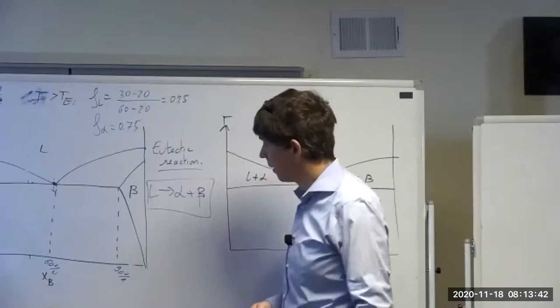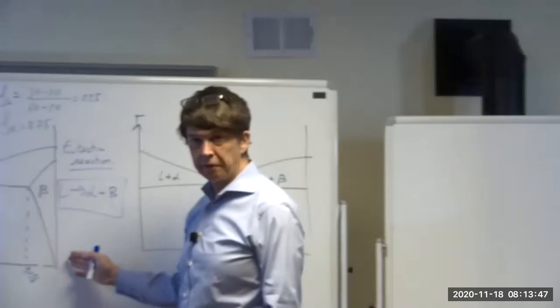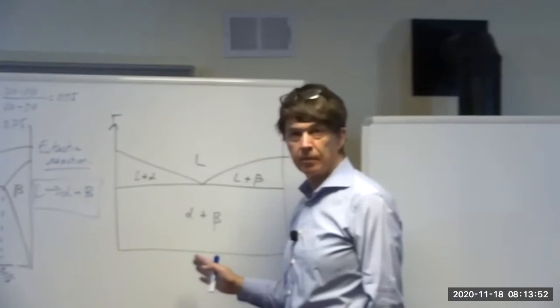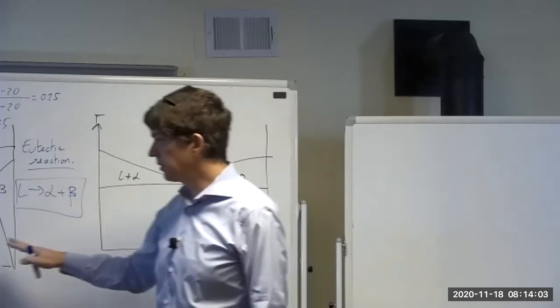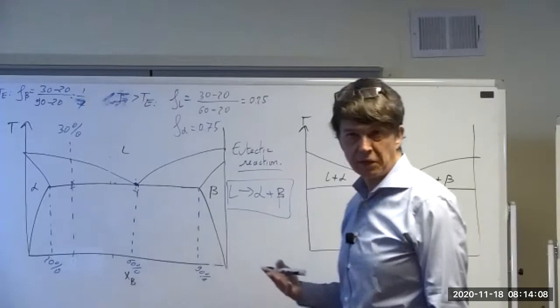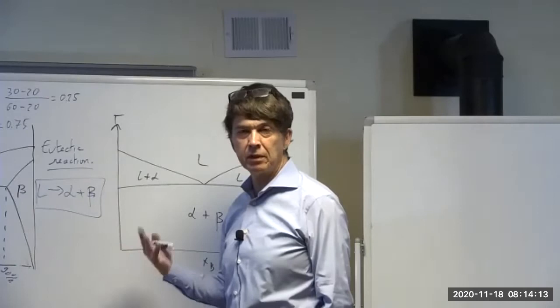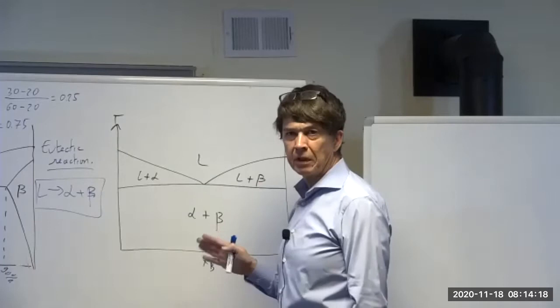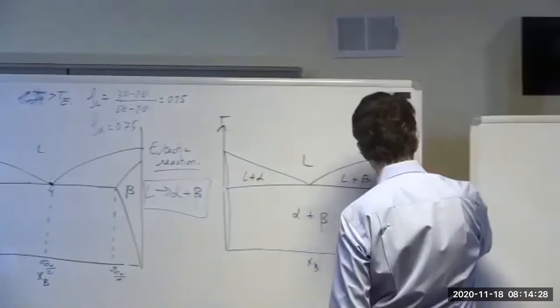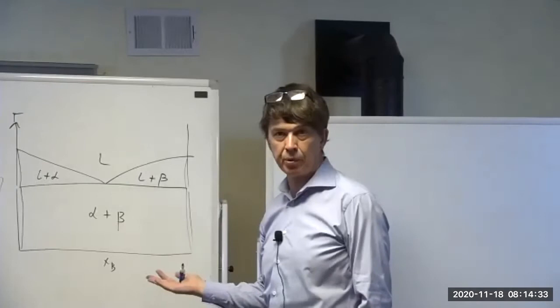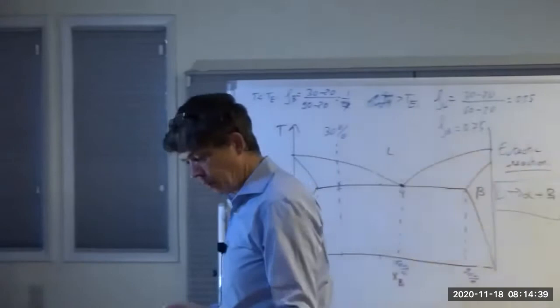Sometimes the solubility in the solid phases is very small, and you'll see a eutectic phase diagram where the single-phase solids are essentially collapsed into the axis. Don't get confused — this diagram is really the same as the standard one with extremely small solubility limits. Sometimes in published books they draw it that way because the solubility limits haven't been carefully measured. It seems to violate the phase rule, but it doesn't — there's really a tiny single-phase region you can't see.